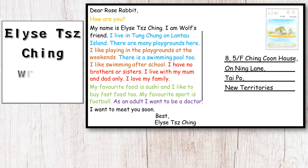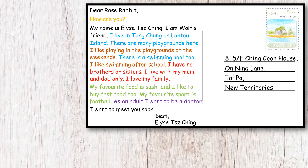Elise Tzijun writes her name: 'My name is Elise Tzijun. I am Wolf's friend.' Elise Tzijun only knows Rose Rabbit because Wolf has talked about her. Because she does not know Rose Rabbit personally, she quickly tells Rose Rabbit her name in the postcard.